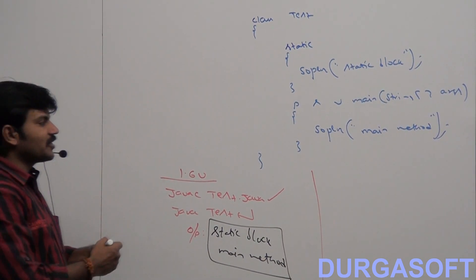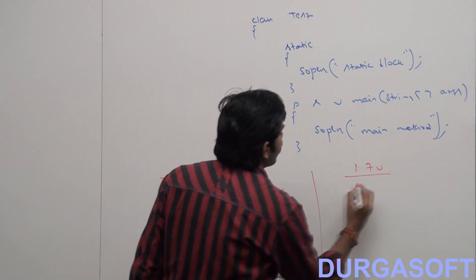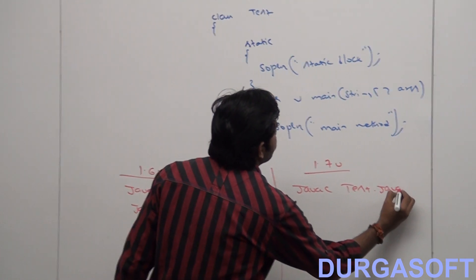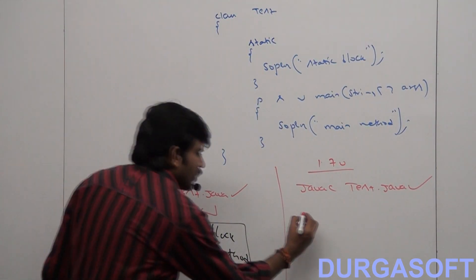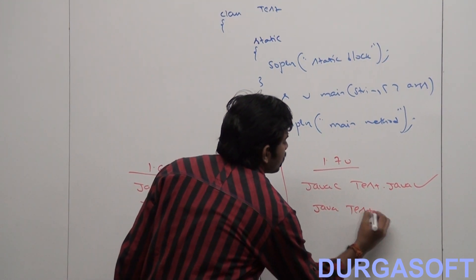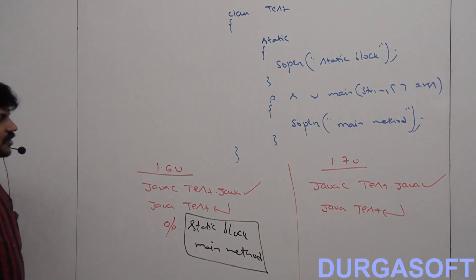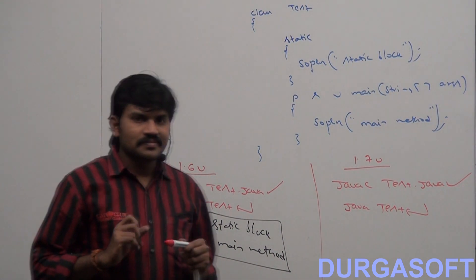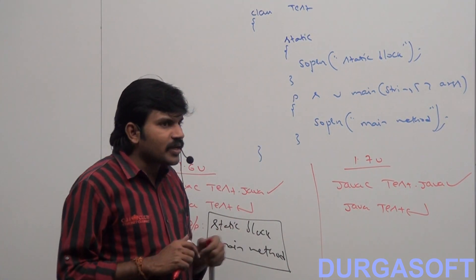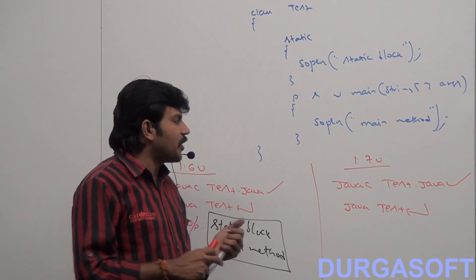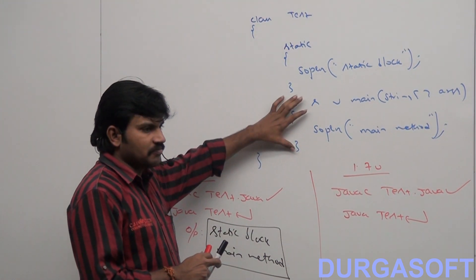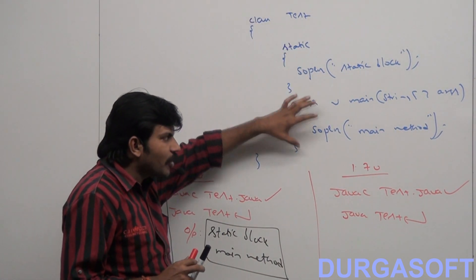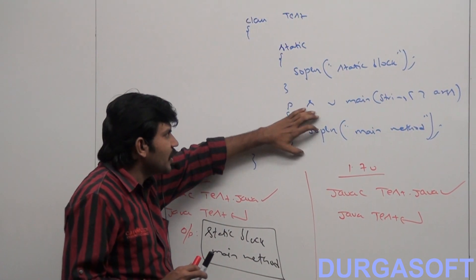But in the 1.7 version, does the code compile? Yes. I am trying to execute Java Tester. What is the output? JVM asks: do you have the main method? Yes, I have the main method. No problem — I will execute. Now what is the output: is it static block followed by main method, or main method followed by static block?